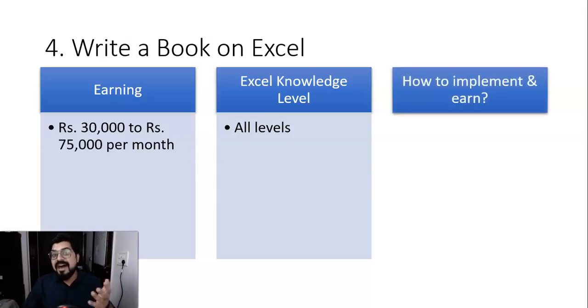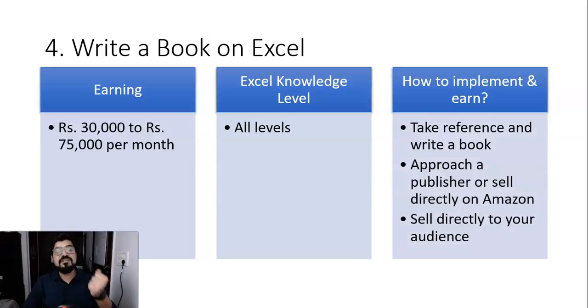Now, how you can do that? It's not that hard. It is just that you have to devote some time and have faith in yourself. So the very first thing is you should take the reference from another Excel book and understand how that person has written that book. Second approach, once you have written that book, it takes two to three months. Once you write that book, after that, you need to approach the publishers near you or Pan India. You can approach them and ask them to publish your book or you can directly sell on Amazon. Also, you can start selling your book directly to your audience.